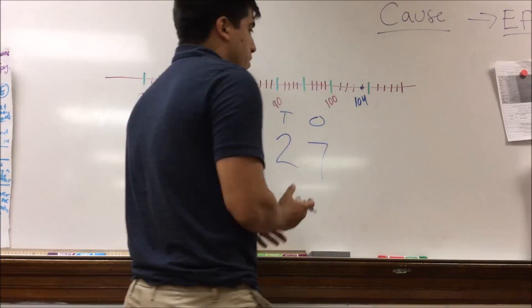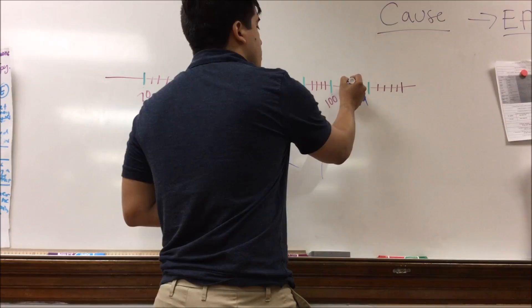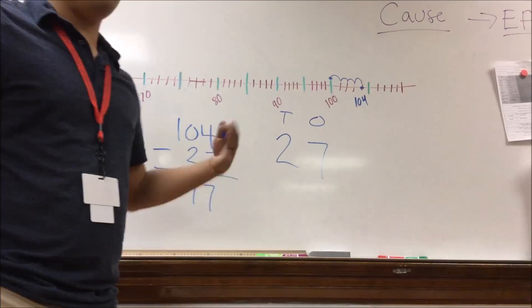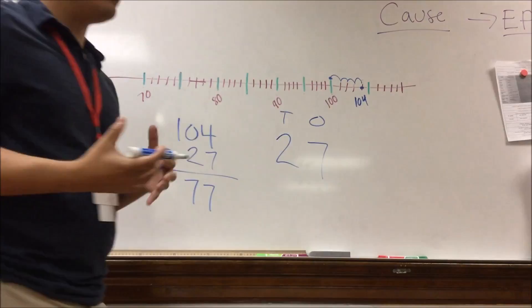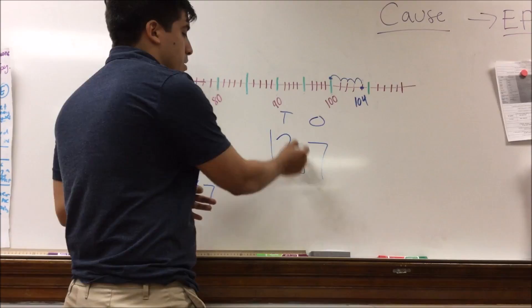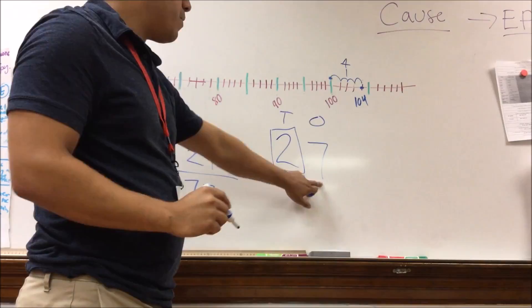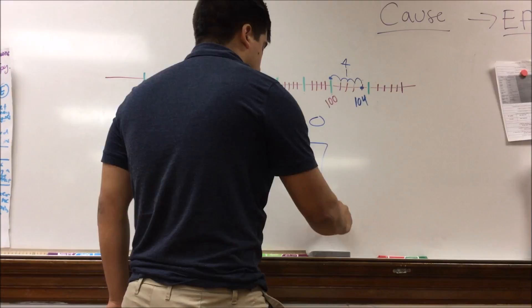Starting from 104, I'll first count back individually from the ones place: 1, 2, 3, 4 spaces — stopping right here at 100. We have 7 in the ones place but I only counted back 4, because it brought us to 100, which is an easy number to count back from. I'll note that we've counted off 4, and take 4 from our ones value of 7, which leaves us 3 remaining in the ones place.